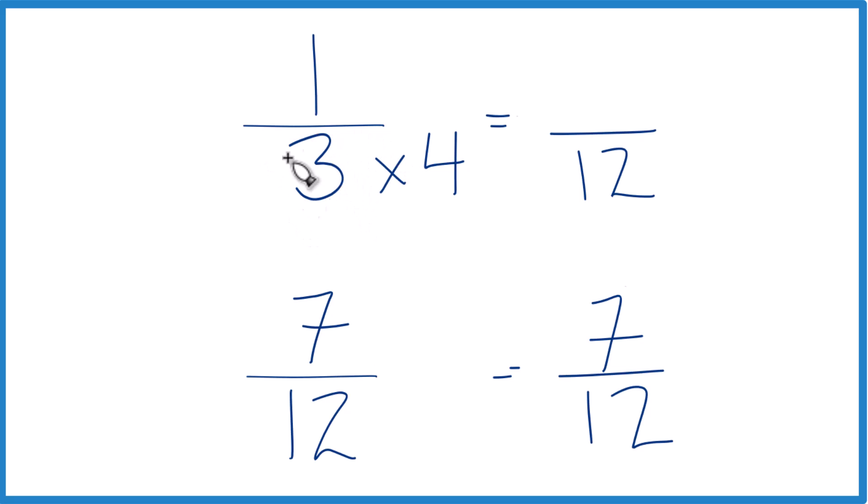Since we multiply the denominator here by four, we do need to multiply the numerator by four. Let's guess four over four, that's just one, so we're multiplying by one. We don't change the value, just the way it's represented.